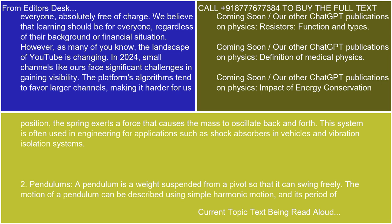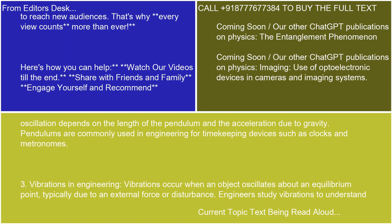2. Pendulums. A pendulum is a weight suspended from a pivot so that it can swing freely. The motion of a pendulum can be described using simple harmonic motion, and its period of oscillation depends on the length of the pendulum and the acceleration due to gravity. Pendulums are commonly used in engineering for timekeeping devices such as clocks and metronomes.